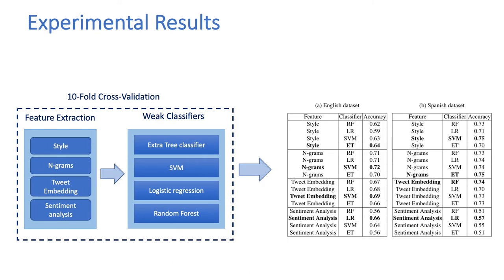After extracting these four groups of features, we built our classification model as an ensemble of classifiers. We consider each group of features separately and perform 10-fold cross-validation on the training set. Then we choose the best classifier for each group of features among support vector machine with linear kernel, logistic regression, random forest, and Extra Trees classifier. According to the results shown in the table, for English, the best performing classifier is Extra Trees for the style feature with accuracy of 64%, SVM for both n-gram and tweet embedding with 72% and 69% accuracy respectively, and logistic regression for sentiment analysis with 66% accuracy.